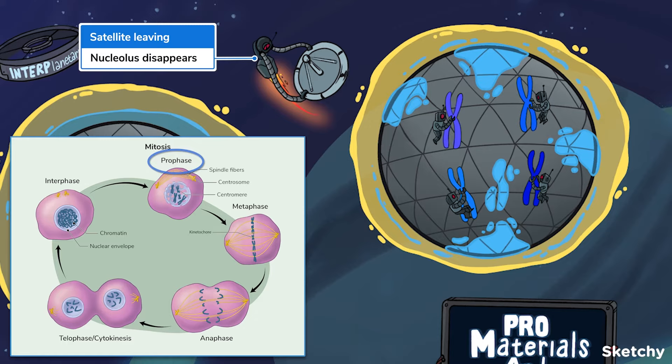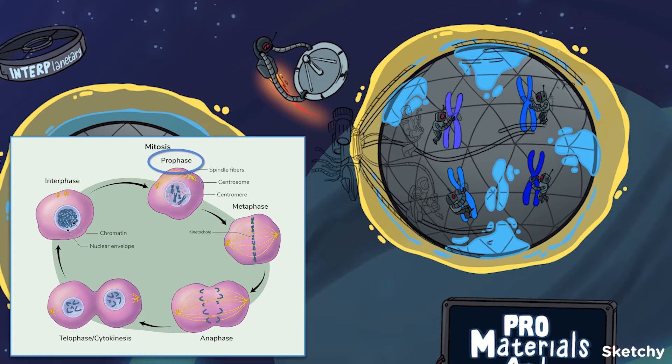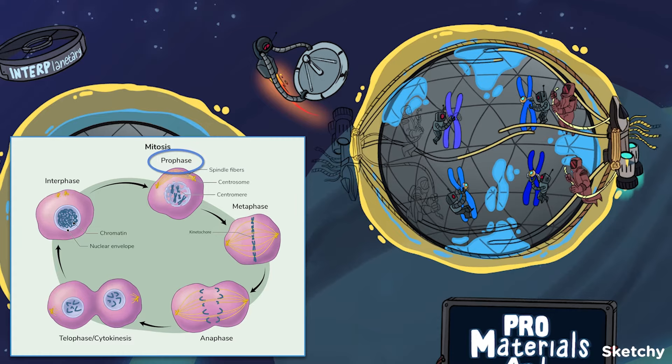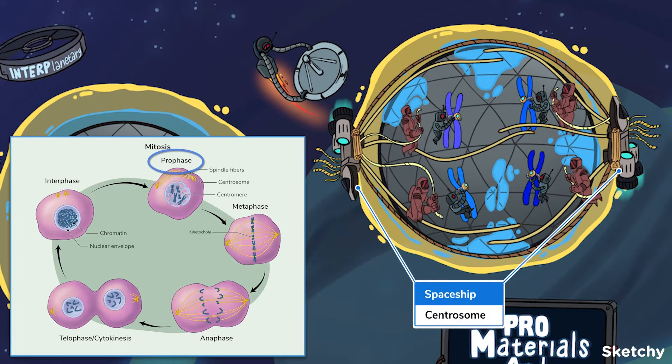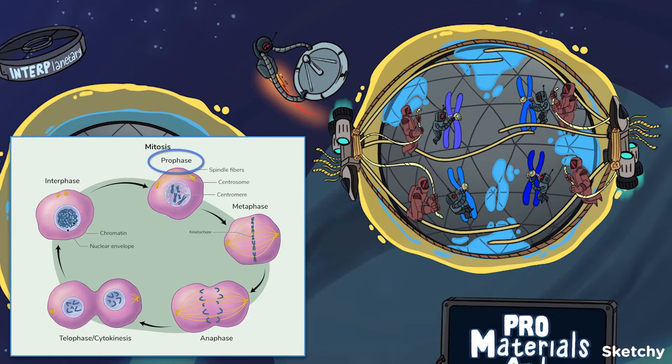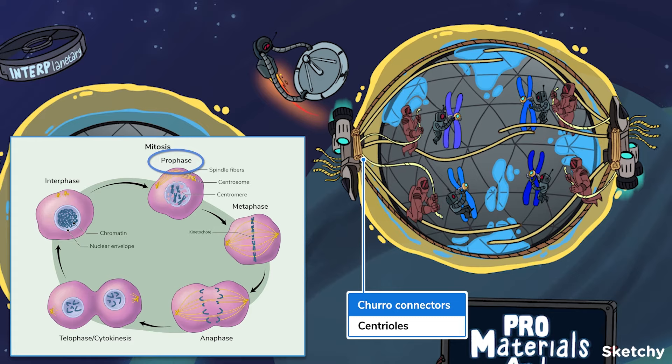But prophase isn't done just yet. Organelles known as centrosomes travel to opposite ends of the cell. They function as the primary microtubule organizing center. These spaceships will help you remember the centrosomes. They'll direct how the building materials move around the station. Each centrosome consists of a pair of cylindrical microtubules called centrioles. These structures look just like churros. Mmm. Churros. Anyways,